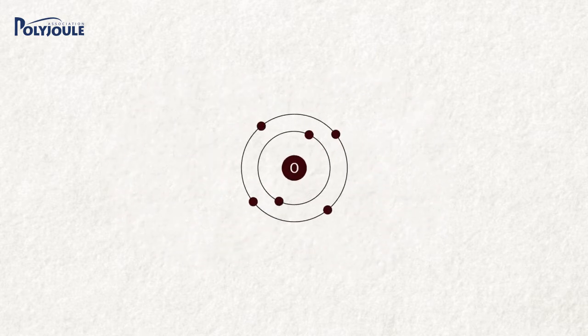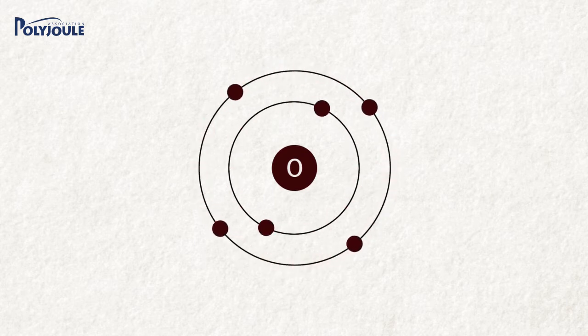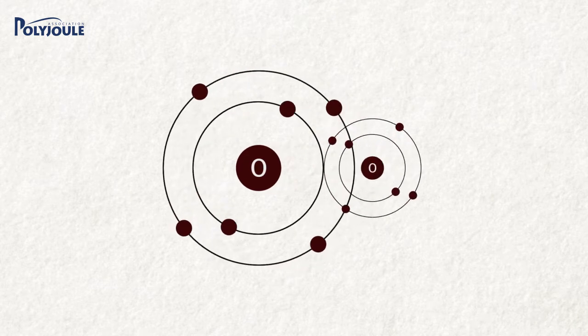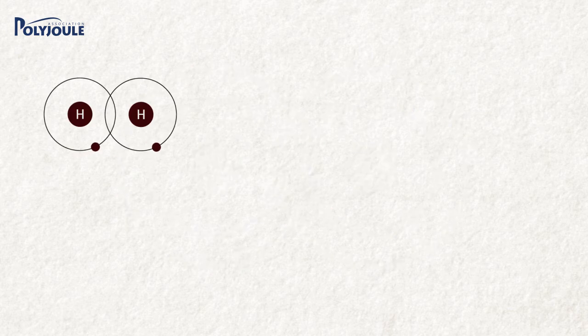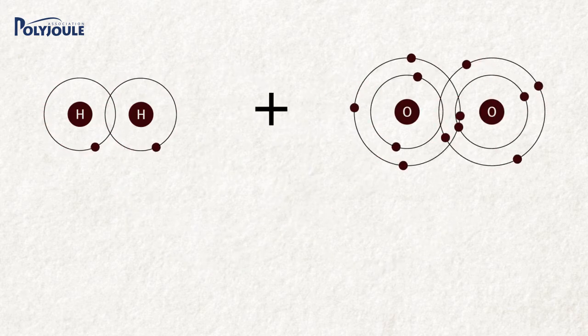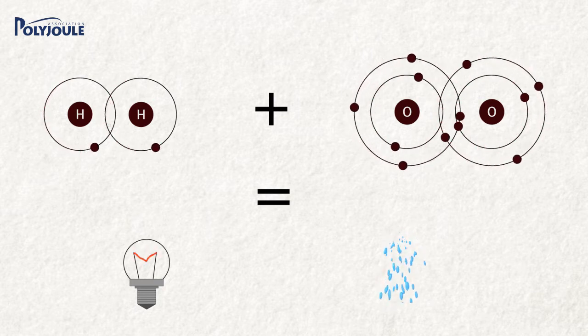The aim of the fuel cell is to use hydrogen with oxygen to create a chemical reaction through a membrane. Oxygen is present at 21% in the air in the form of dioxygen. Reactions between H2 and O2 create an electric current and reject only water, no CO2 gas.